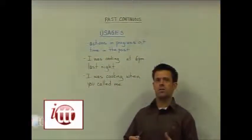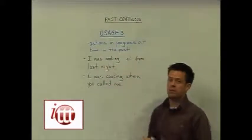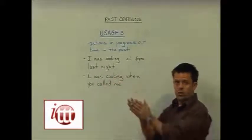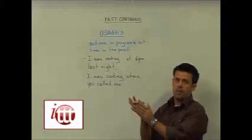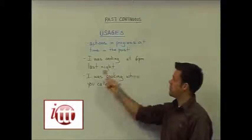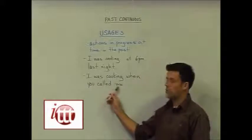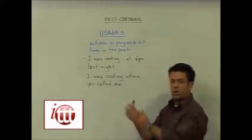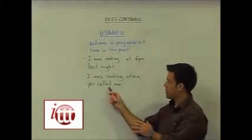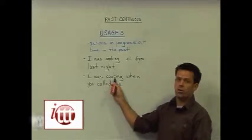The usage for the past continuous tense is expressing actions in progress at a time in the past. For example, 'I was cooking at 6 p.m. last night' — there was an action that began, occurred, and finished at a particular point in the past. I could also say 'I was cooking when you called me' — the continuation of an action that happened at a particular time, while 'you called' is conjugated in the past simple as it wasn't continuing; rather, the cooking was continuing.